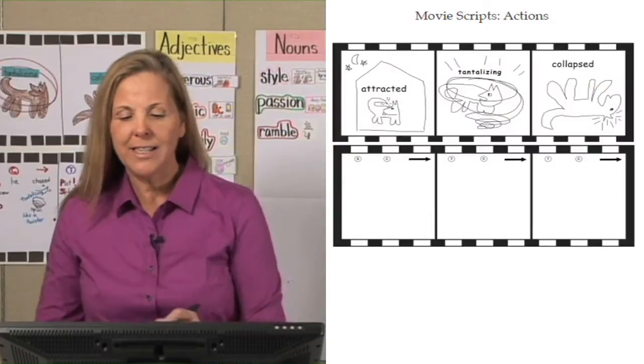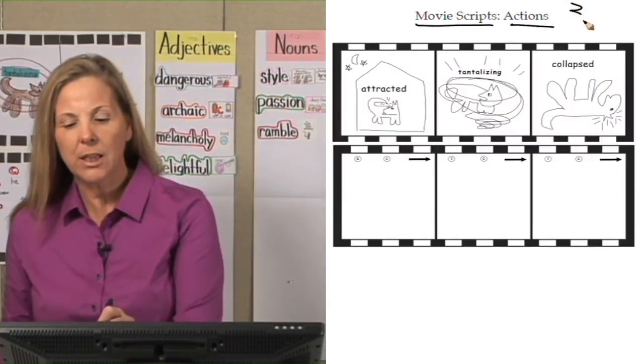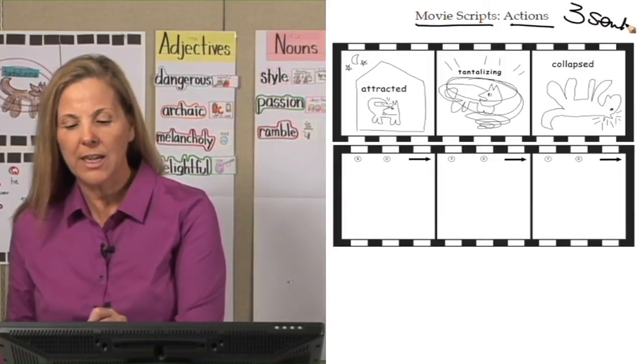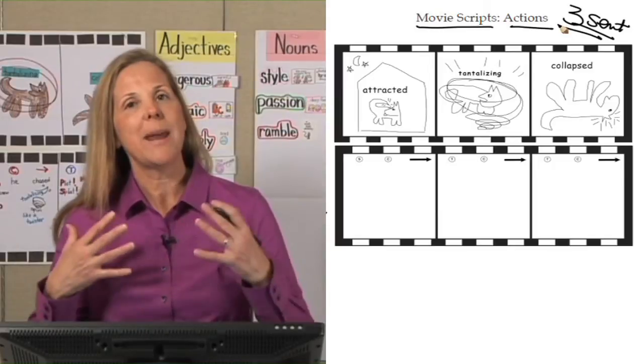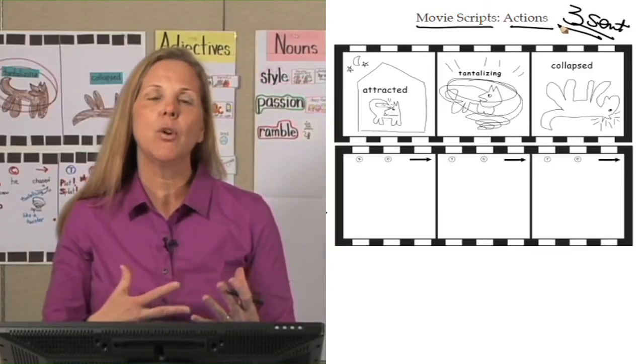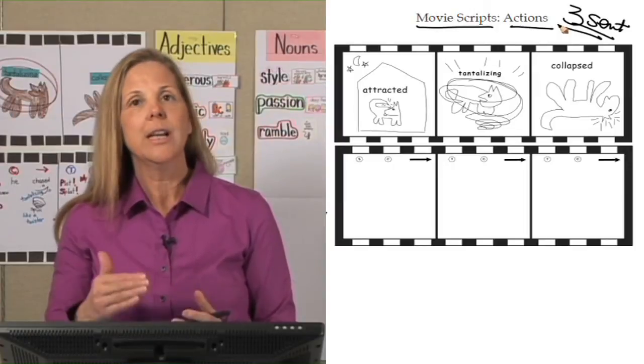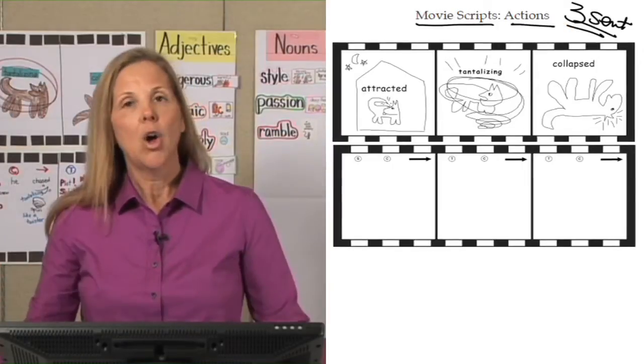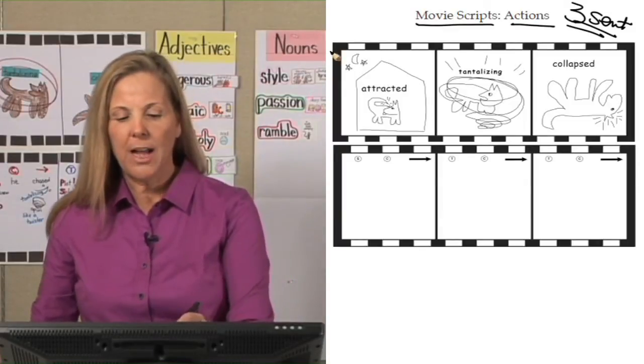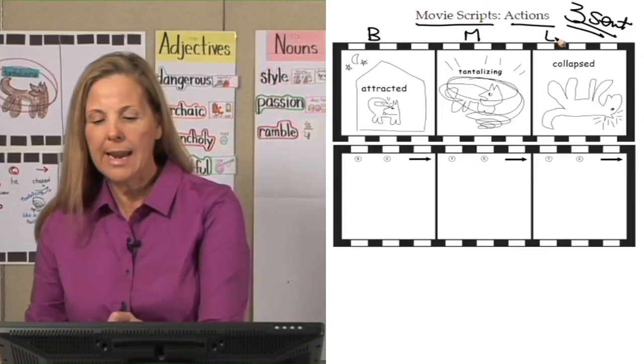On page 21, notice it says movie scripts actions. That means that this is going to be a three sentence movie. Yes, three sentences. That's because we're focusing on making powerful sentences, embedding vocabulary that connect. So when we're making a movie script here, it's going to be a simple happening with a focus on those skills. On the movie script, what you will find is there's a beginning, middle, and end box.